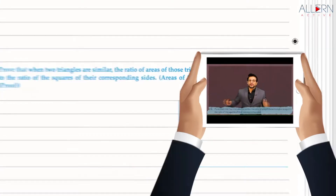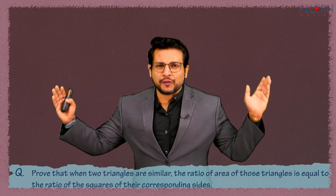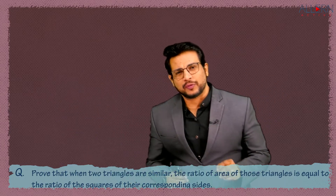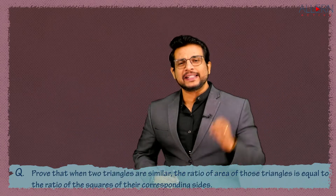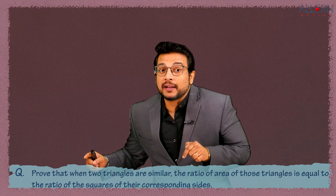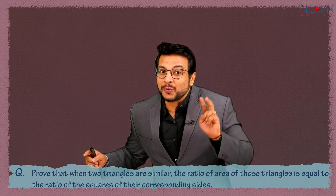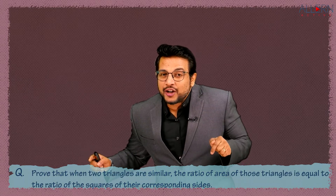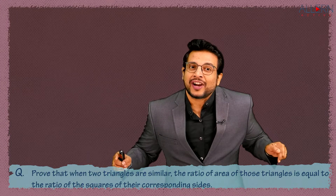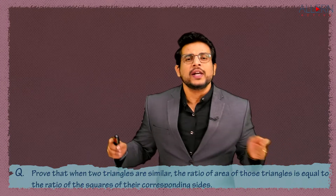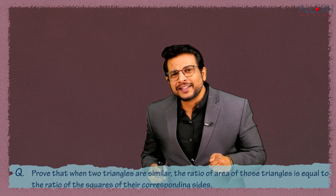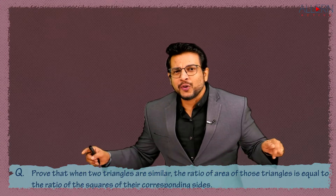We are supposed to prove this statement. First of all, let's read the statement and understand what we are supposed to prove. The statement says: prove that when two triangles are similar, the ratio of the areas of those triangles is equal to the ratio of the squares of the corresponding sides.